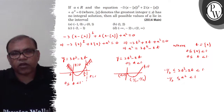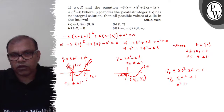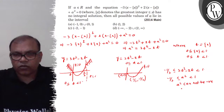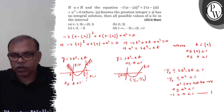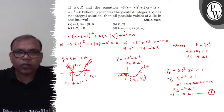अब a² cannot be negative। तो a² की जो value लाई करेगी, यह 0 से लेके 1 के बीच में होगी। इसका मतलब a की जो value लाई करेगी, यह minus 1 से लेके 1 के बीच में होगी। इसको लेके चलिए first condition।